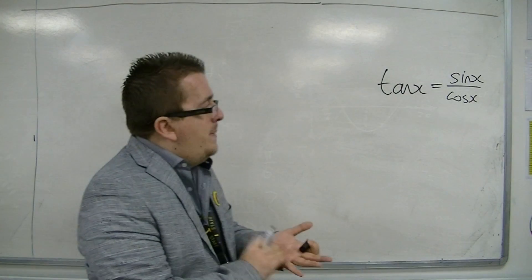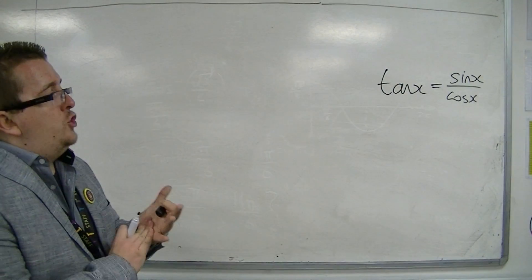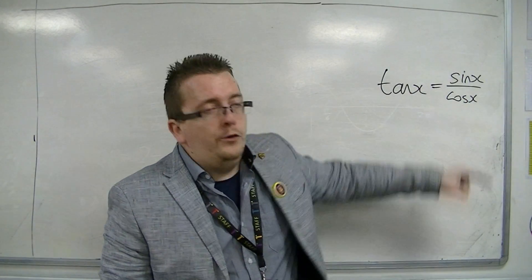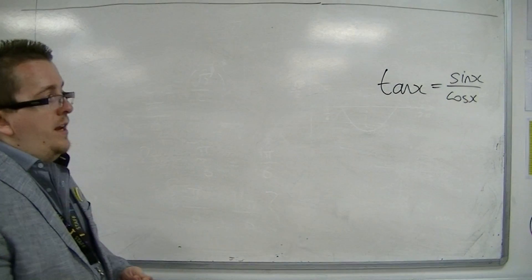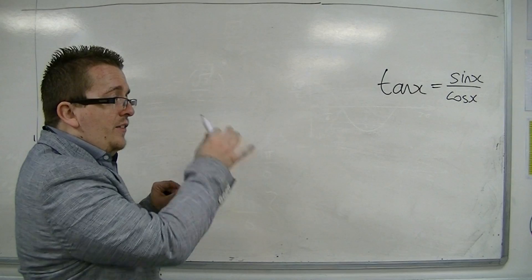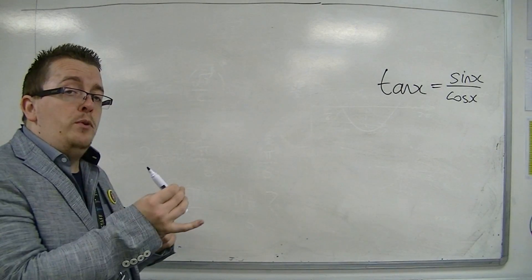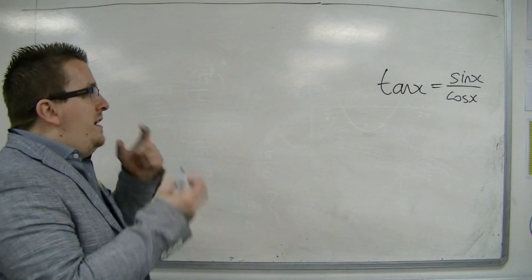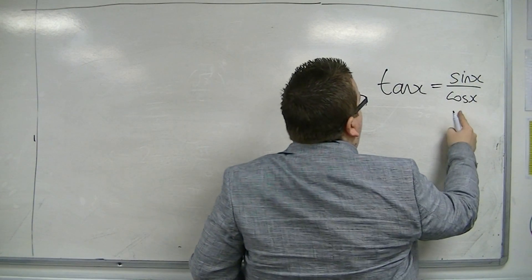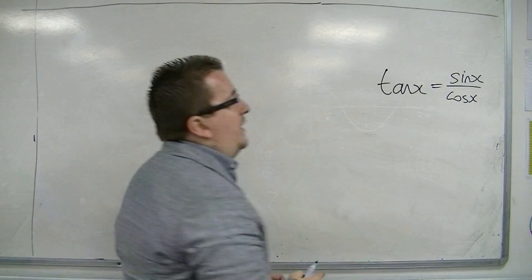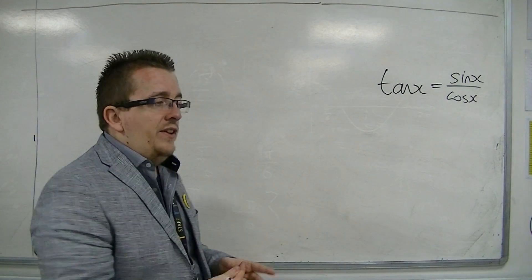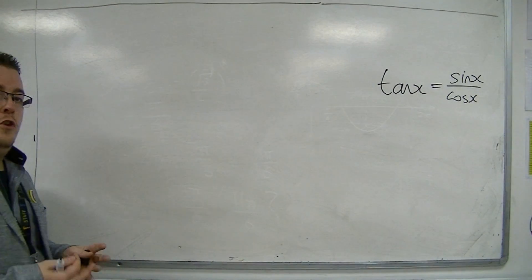Now, the thing about this is, in sketching tan, is that you've got to understand that cosine — and we sketched it in one of the previous videos — when cosine intercepts the x-axis, at those points it is zero. So when cosine x is zero, we have sin x over zero, and so this creates asymptotes. There are points on the tan graph that do not actually exist.